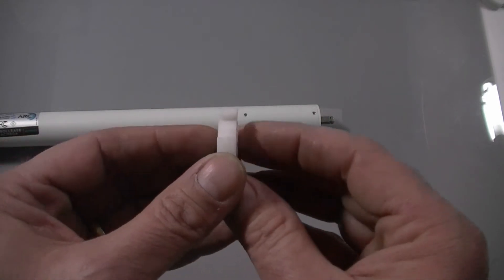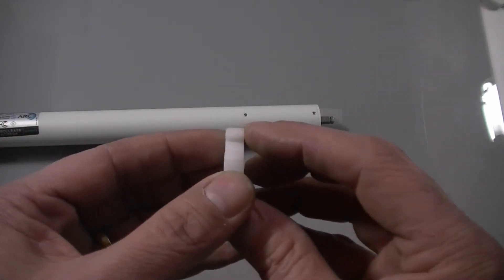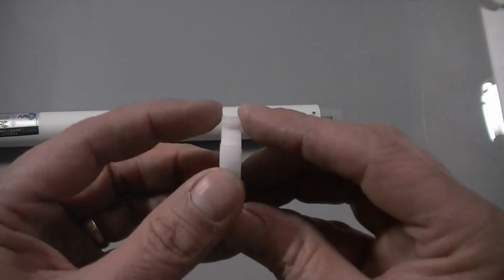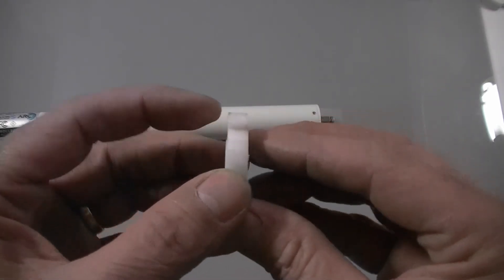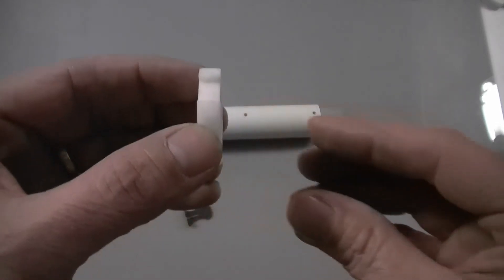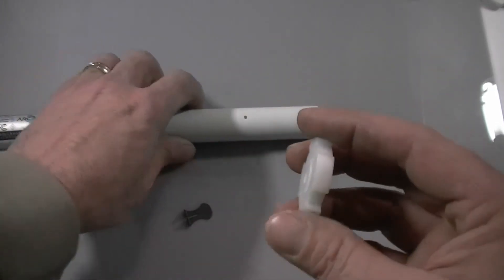The reason this makes a difference is that the diameter on this side is smaller than it is on this side, just slightly, and that makes it a little bit easier to install into the tube.